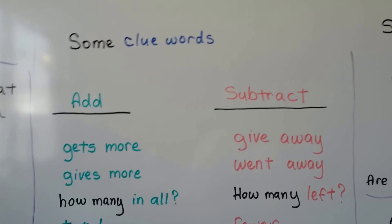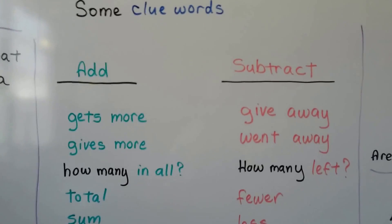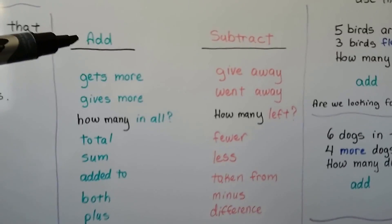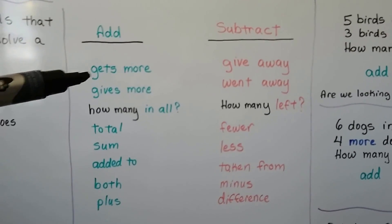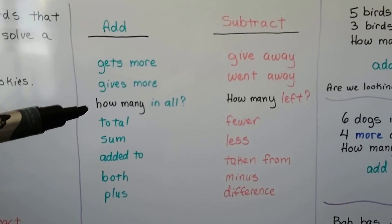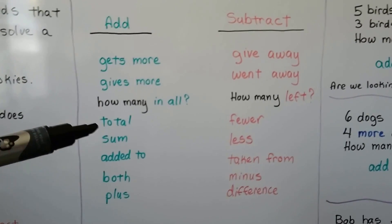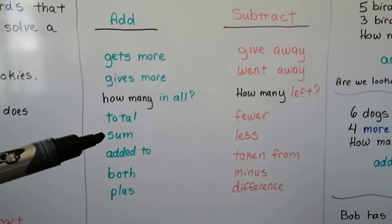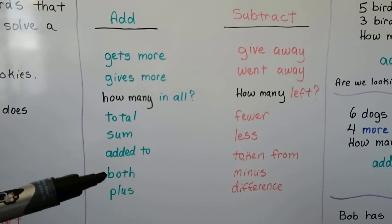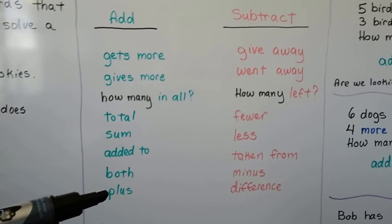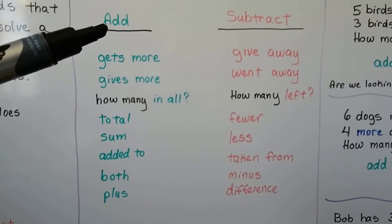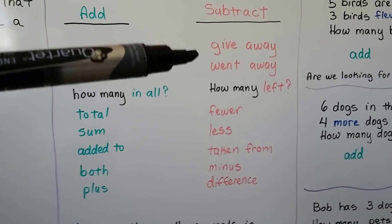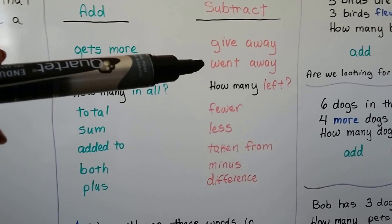There are many keywords — these are just some of them. For addition, we'll see clue words like 'gets more,' 'gives more,' 'how many in all,' 'total,' 'sum' — sum is the answer for an addition problem — 'added to,' 'both,' and 'plus,' which is the sign we use for addition.